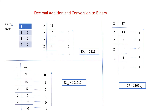We are going to perform a decimal addition and compare the results with binary addition to understand binary addition. Take the decimal numbers 15 and 27: 15 + 27 = 42. Converting to binary using repeated division: 15 is 01111, 27 is 11011, and 42 is 101010. Note these binary equivalents as we will use them in the addition and to verify our results.